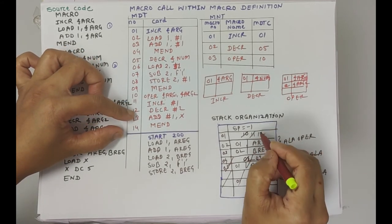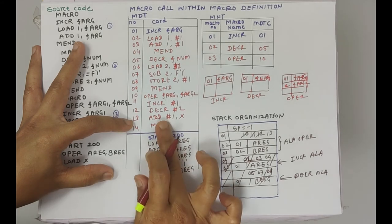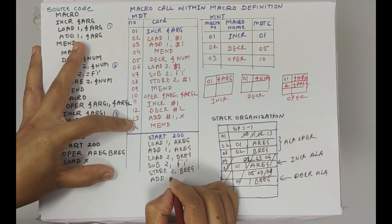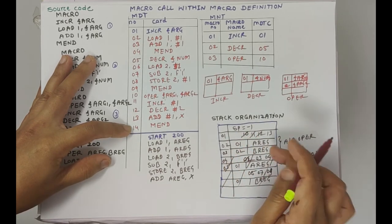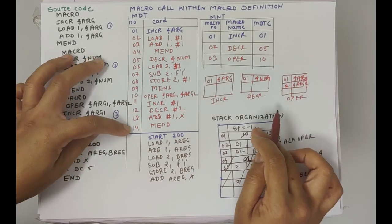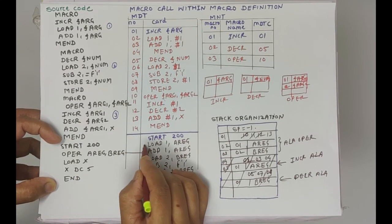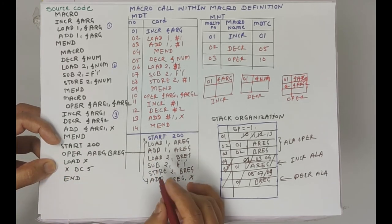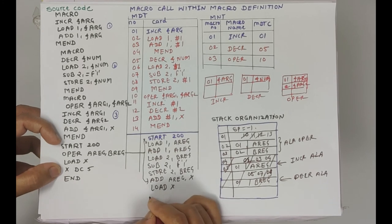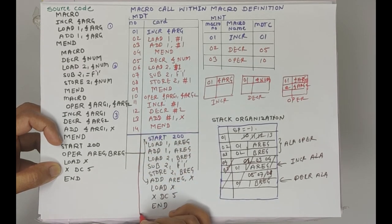After position 12 is done, we move to position 13: add #1 X, which is not a macro call. Hash 1 in OPER's ALA is AREG, so we write: add AREG X. Finally, position 14 is MN — OPER is also complete. We come back and get minus 1 position, meaning we return to the next line of the source program. This is the complete expansion of the OPER macro call. Next in the source, load X is written as-is (no macro call), then DC, and finally end. This is my final output — the target code.